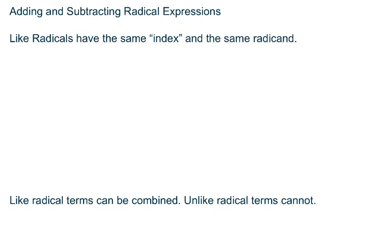The most important definition that we need to focus on in this section is the idea of like radicals. Like radicals have the same index and the same radicand. Now, you'll remember the word radicand from previous sections. That's the quantity underneath the radical. The index refers to the type of root, whether it's a square root, a cube root, a fourth root, etc. And as you know, in this course, we're really focusing our attention on square roots.